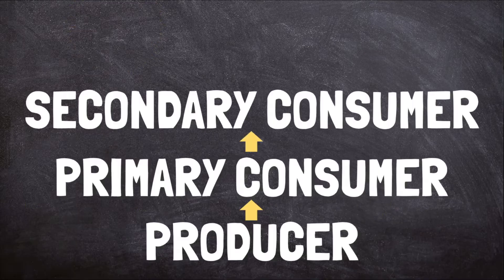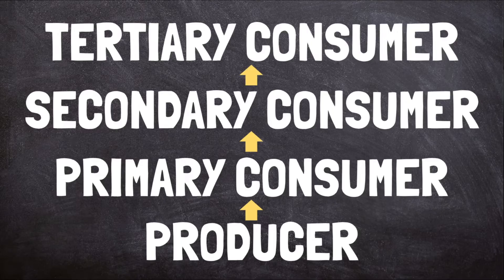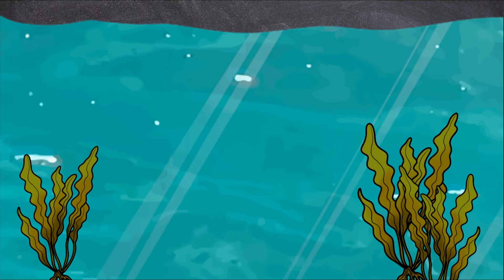Some food chains are more complicated and include even more levels of consumers. Tertiary consumers eat secondary consumers. Tertiary consumers are carnivores that eat other carnivores. Here's an example of a food chain that includes a tertiary consumer.